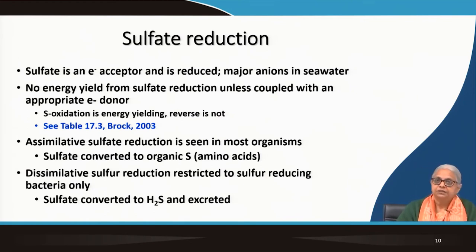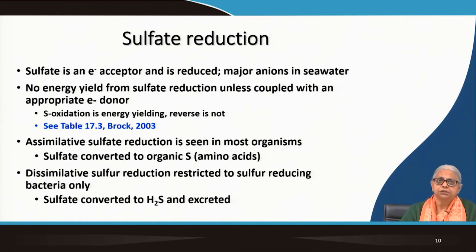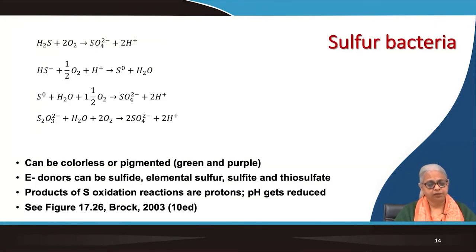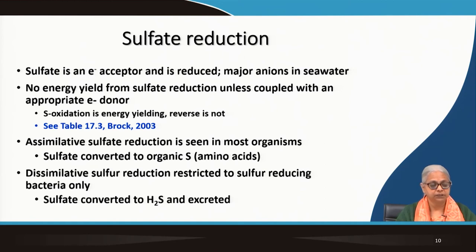In sulfate reduction, sulfate is an electron acceptor. It gets reduced and is also a major anion in seawater. By itself, sulfate reduction is not capable of providing energy — for the organism to derive energy using sulfate as the electron acceptor, it has to be coupled with the appropriate electron donor. Sulfur oxidation is energy-yielding, but the reverse reaction is not. Hydrogen sulfide to sulfate has a negative delta G — high magnitude and negative — so energy can be obtained. But sulfate going to sulfide has a positive delta G, and therefore it is not an energy-yielding reaction. It has to be coupled with the right electron donor.